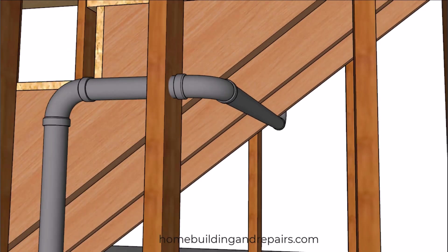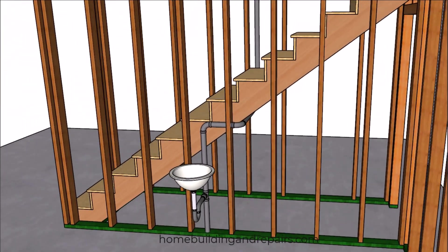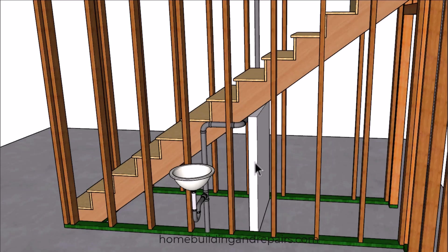Sometimes you're going to need to do a little more planning. Another thing you can do will be to install a wall in front of the plumbing pipe like we've done here. However, this will be making the closet a little smaller.